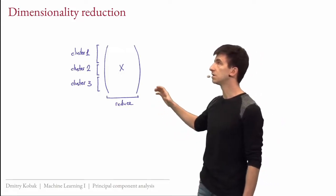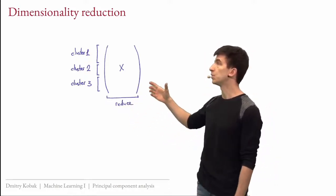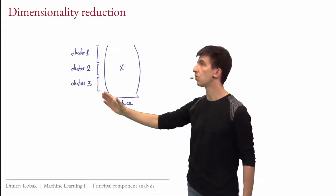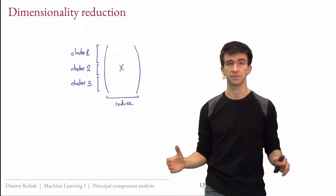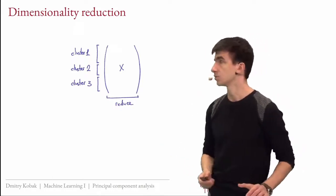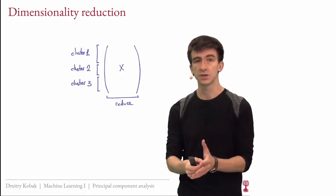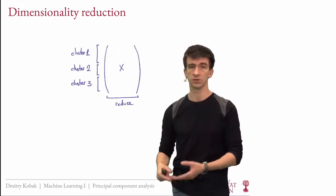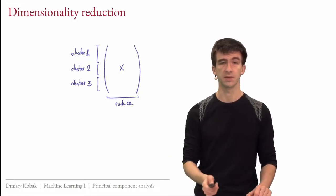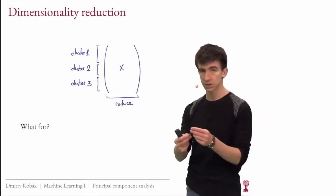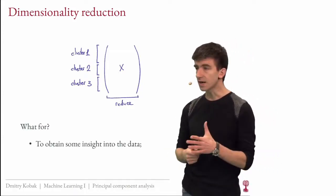We usually don't want to just pick some features and discard others; we want to treat all features together and reduce the number. Let's say we had a thousand features in the dataset and we want to keep 10 — we transform the existing thousand features and produce 10 new features. This is dimensionality reduction: reduce the dimensionality of the data, but importantly we're transforming the features, not just selecting them.